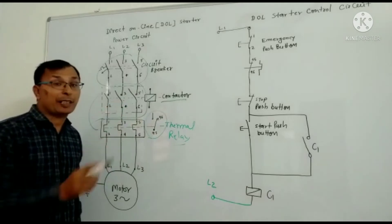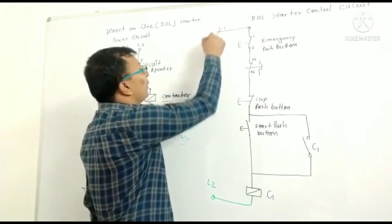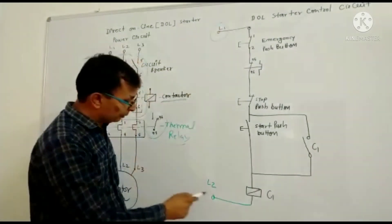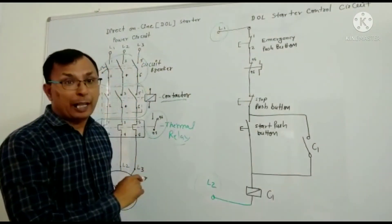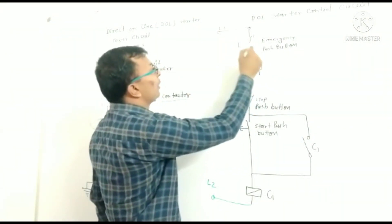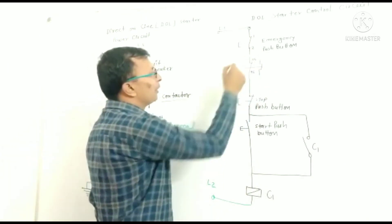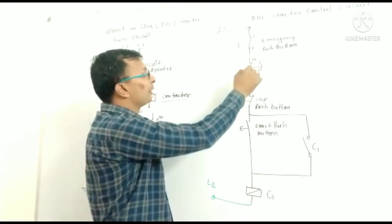Now let us see the Control Circuit: L1, L2, Emergency push button NC, Relay NC 95 to 96.